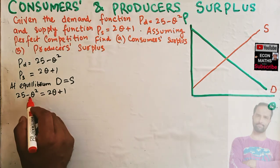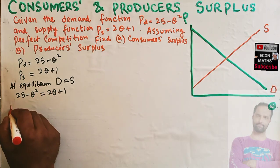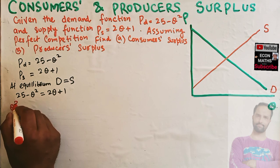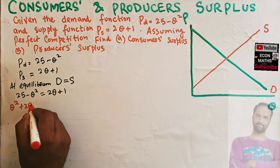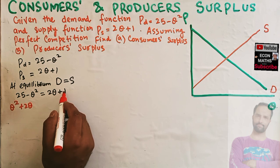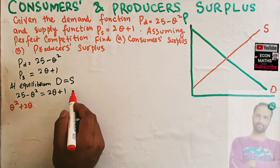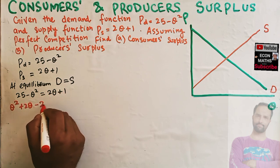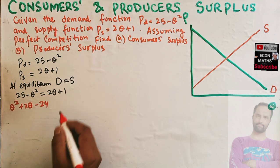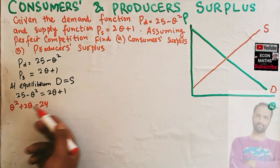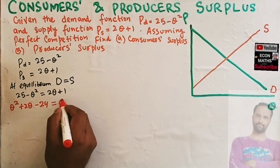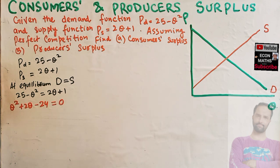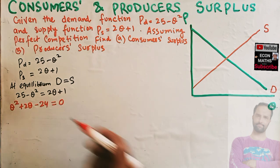Transposing terms, q squared becomes positive and moves to the left side. We get q squared plus 2q, then transposing 25 gives us minus 24, so the equation becomes q squared + 2q minus 24 = 0.